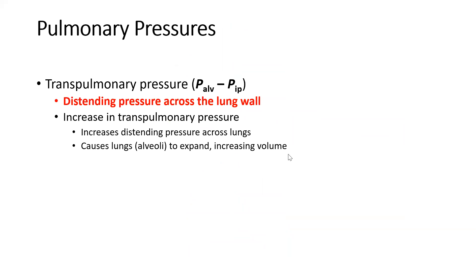The final pressure to clarify is the transpulmonary pressure — the difference between alveolar pressure and intrapleural pressure. This is the distending pressure across the lung wall — how easy it is for the lungs to inflate and allow for the pressure gradient so air can move in. If we increase the distending pressure, the lungs want to expand and inflate more easily, which we do by changing volume, which then changes pressures.